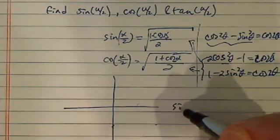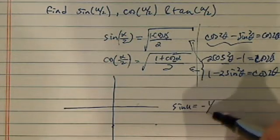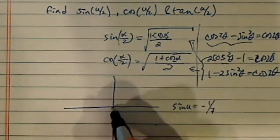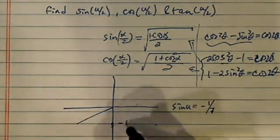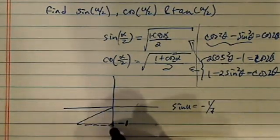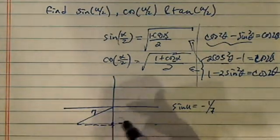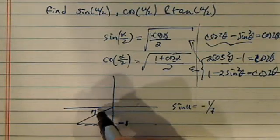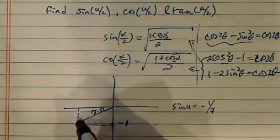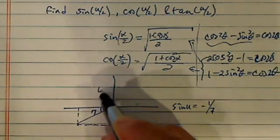Sine of u, we're given, is -1/7 in the third quadrant. So we have minus 1 and 7. Since we're looking at the sine, this is the u angle here.